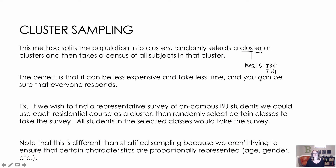You have to be careful, though, that your clusters are not biased in any way. If we want a representative survey of on-campus residential BU students, we could use residential courses as clusters — taking all courses happening, not just math, and randomly selecting certain classes such as an English class, a human physiology class, or an MA101 class. We talk to everybody in those randomly chosen groups.